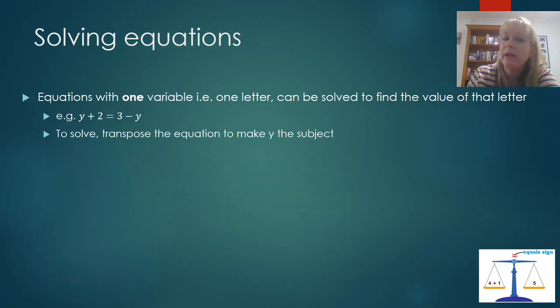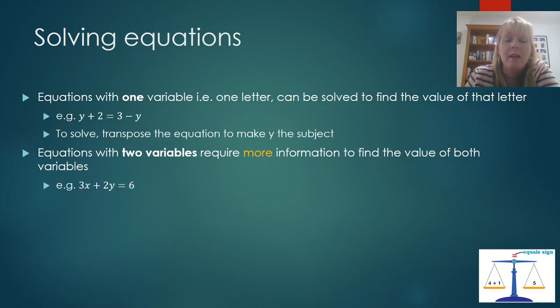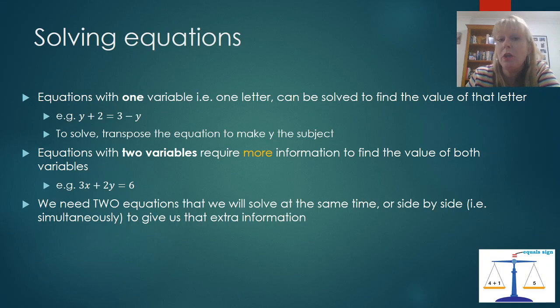Now, when we have an equation with one variable, that is one letter, we can easily solve that to find the value of that letter. So in this example here, we've got y plus 2 equals 3 take away y. To solve that, we simply transpose the equation and make y the subject. But when we have two variables, we need more information than just one equation to find the value of x and y. We actually need two equations that we solve at the same time or side by side, which is what simultaneous means, to give us that extra information.